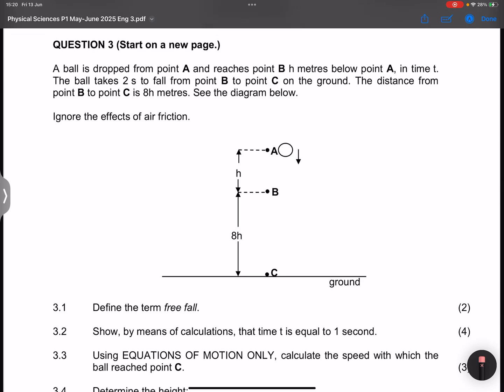They say a ball is dropped from point A and reaches point B, which is h meters below point A in time T. The ball takes two seconds to fall from point B to point C, which is on the ground. The distance from point B to point C is 8h meters. See the diagram below and ignore the effects of air friction.